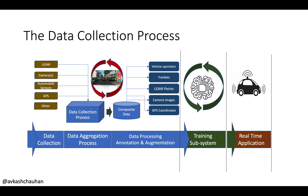After data collection, an aggregation process runs which composites the data so that various information from raw data can be transformed into more informed data — such as vehicle operation, tracklets, LiDAR points which can generate a 3D world around the car, camera images depending on how many cameras are in the dataset, and GPS coordinates of the car while running.